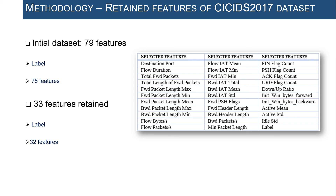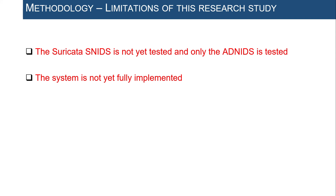To reduce the time required for constructing the baseline, we reduced the number of features by eliminating constant, quasi-constant, duplicated, and correlated features, retaining 33 features instead of 79 in the original CICIDS 2017 dataset. The baseline is modeled using 32 features, reducing required time and computational resources during training. A key limitation is that the experimentation only concerns the ADNIDS module; Suricata SNIDS is not yet tested and will be the subject of future work.